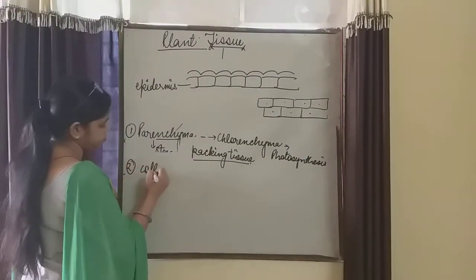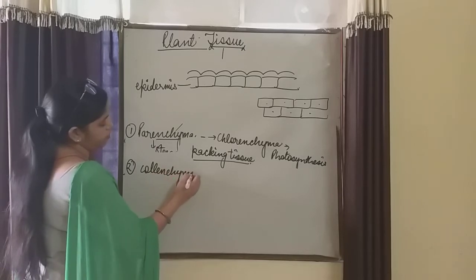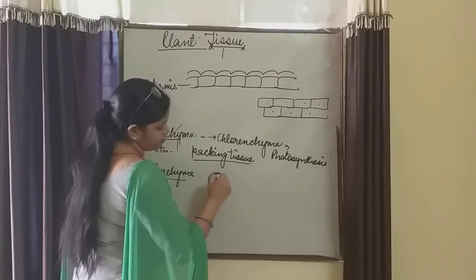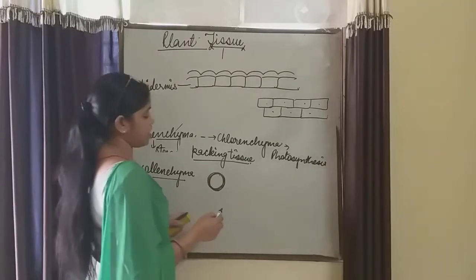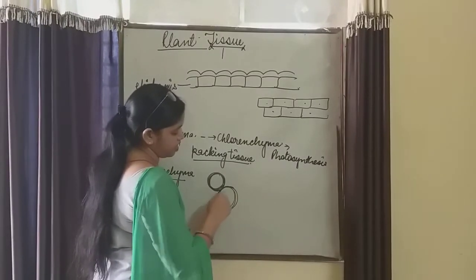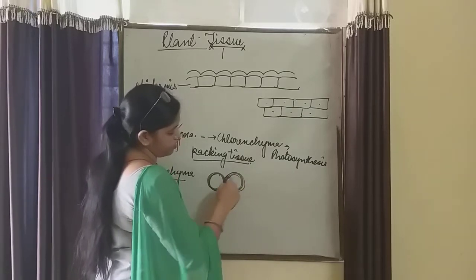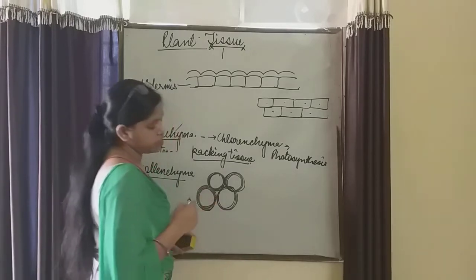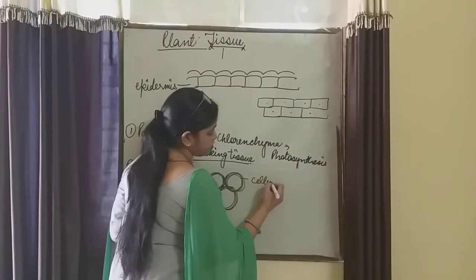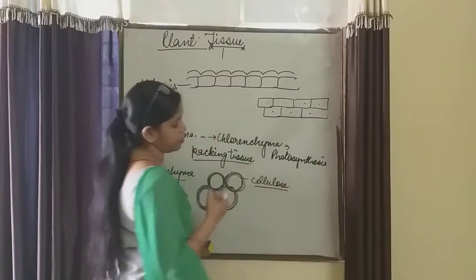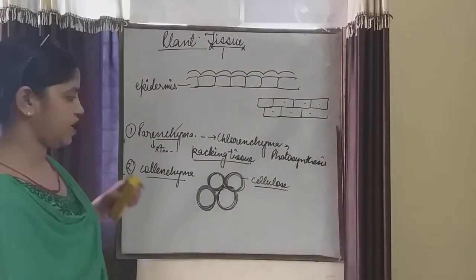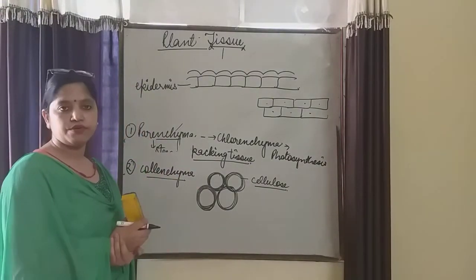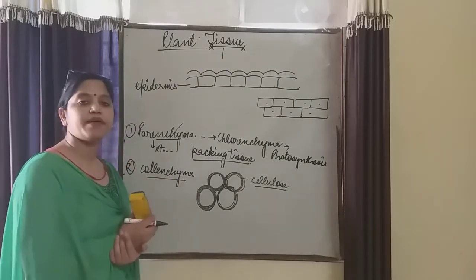Second one is colenchyma. Cells are oval, polygonal, rectangular. The cells are having nucleus. Colenchyma is below parenchyma. And the cell wall is very thick. Due to the thick cell wall, the intercellular spaces are absent.